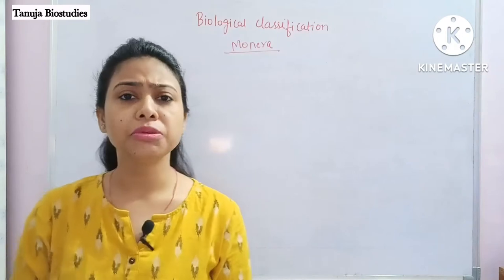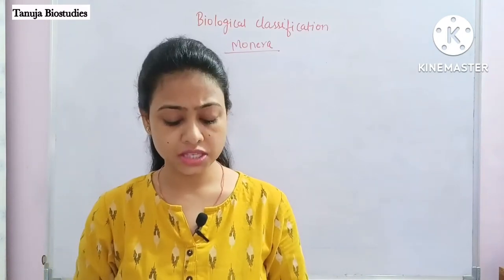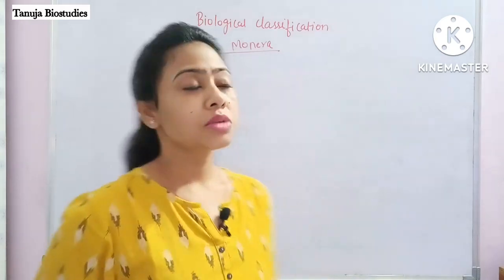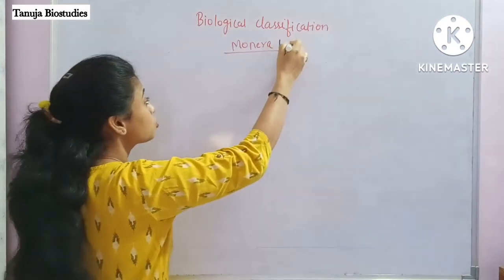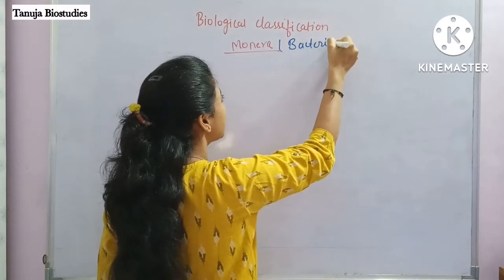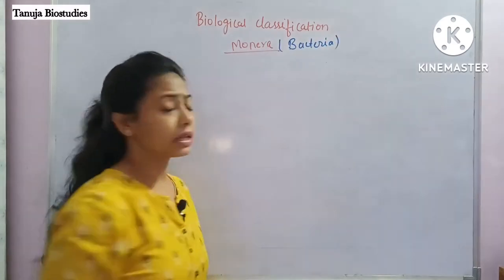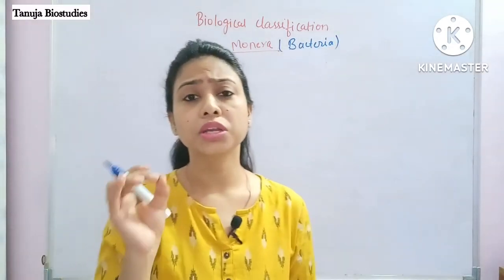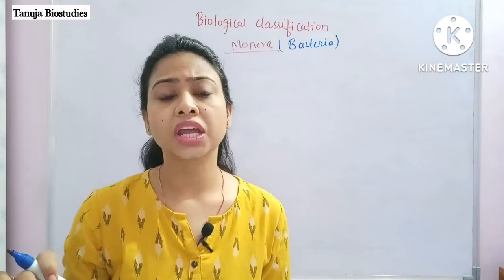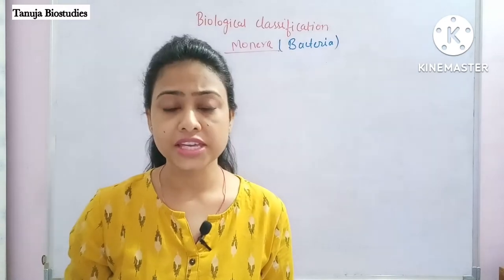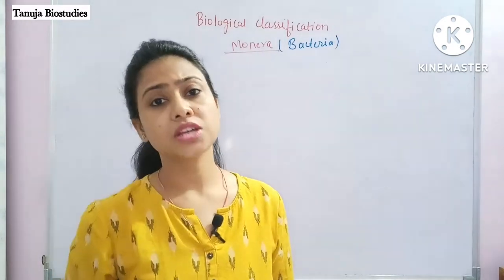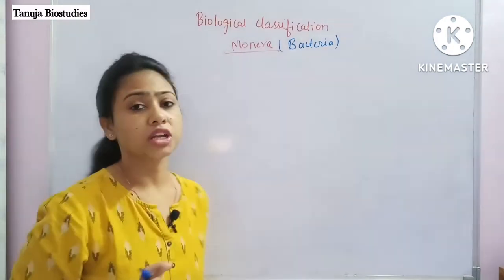We will study it in detail, in a little deeper so that every point will be easily clear. If we talk about Moneras, we will talk about bacteria. As we have discussed this classification in our previous class, we have classified all organisms present on Earth into 5 kingdoms, and the first kingdom is Monera.